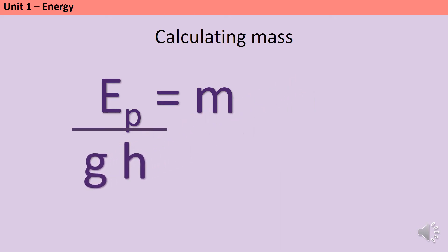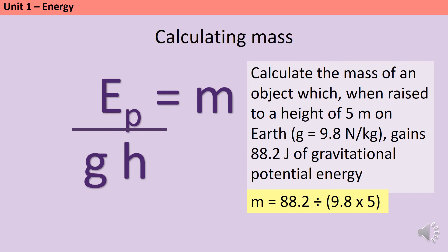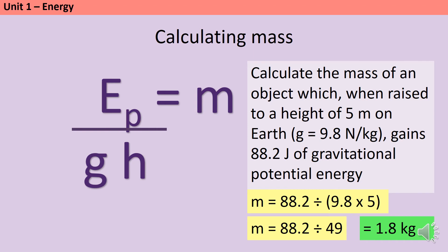This rearranged equation tells us that gravitational potential energy divided by gravitational field strength and height equals mass. So if an object raised to five meters on Earth (g = 9.8) gains 88.2 joules of GPE, mass equals 88.2 divided by (9.8 × 5). You can use brackets on your calculator or work out g × h first: 9.8 × 5 = 49, and 88.2 ÷ 49 = 1.8 kilograms.